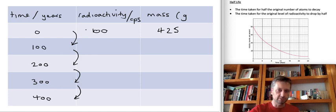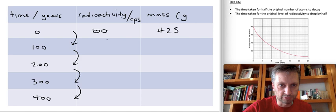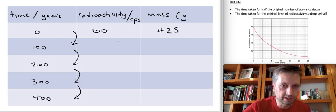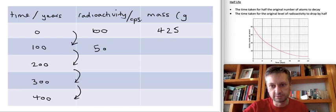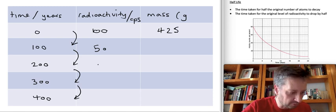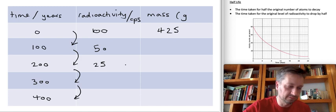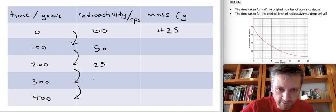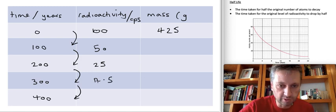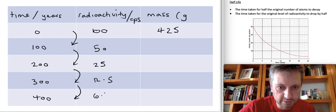Right, the radioactivity. We start with 100 counts per second. After 100 years, the count rate of smithium, we would expect to drop to 50 counts per second. Equally, this could be percentage. It could be becquerels. Remember, those units can vary. After another half-life goes past, half of 50 is 25 counts per second. After another half-life goes past, half of 25 counts per second would be 12.5 counts per second. And half of 12.5 would be 6.25.